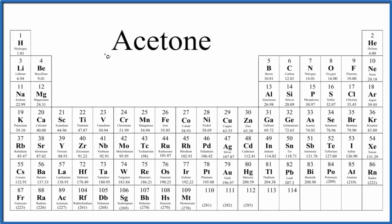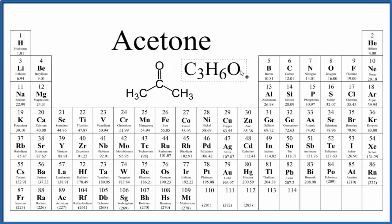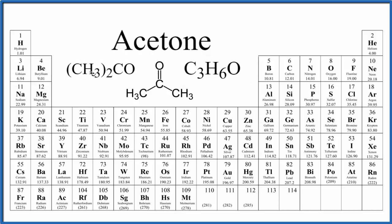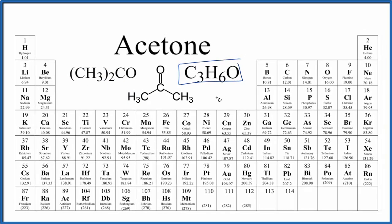Let's find the molar mass for acetone. This is the chemical structure, the structural formula for acetone: three carbons, six hydrogens, and one oxygen. We could write the molecular formula like this, although sometimes you'll see it written differently because we have these two methyl groups right here, and here's our carbon with the double bonded oxygen. Either way is fine — this way gives us a little more information. Let's use this one to find the molar mass for acetone.